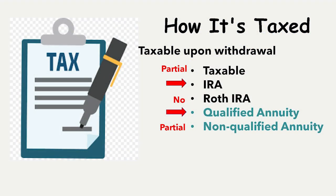For money that's taxable upon withdrawal: for a taxable account, some of it might be taxable — you might be paying tax along the way, and you may pay more tax on gains when you take it out. An IRA would be fully taxable as income when you take it out. Roth IRA, no — as long as you played by the rules. A qualified annuity, the entire thing would be taxable upon taking it out; it grows and is invested like an IRA. And a non-qualified annuity is money that you put in from taxable, after-tax income — as you take it out, you'd be taxed on the earnings.